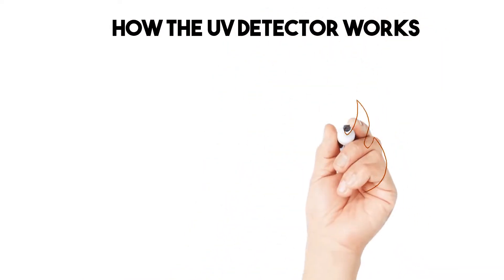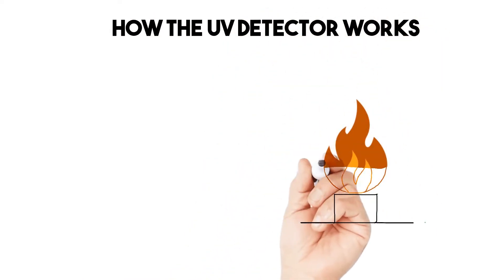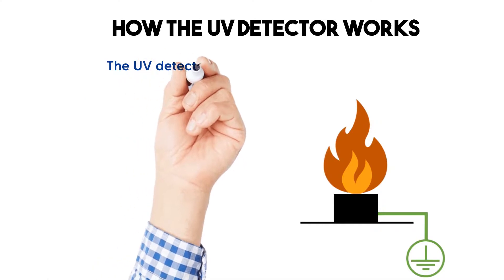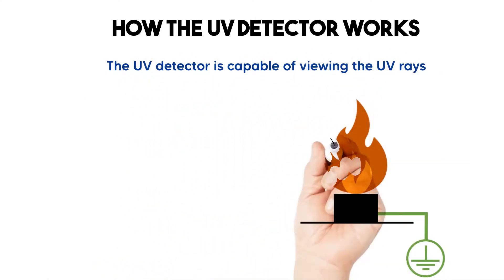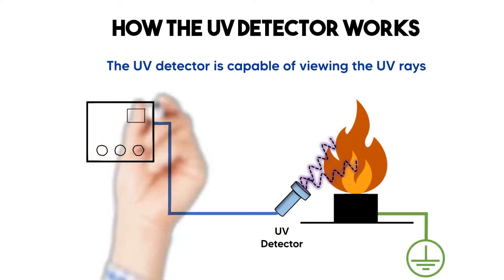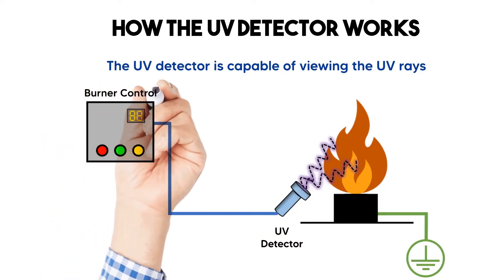How the UV detector works. The UV detector is capable of viewing the ultraviolet rays generated by a flame, typically up to distances of 30 centimeters or more.